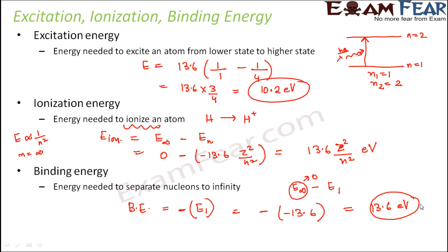The key difference: in ionization energy, you send the electron from the present orbit (which could be any orbit) to infinity. In binding energy, you specifically send the electron from the ground state to infinity. These are the three types of energies: excitation energy, ionization energy, and binding energy.